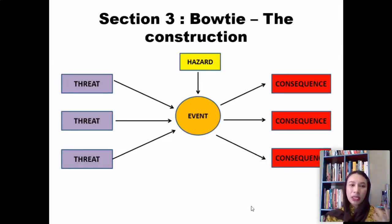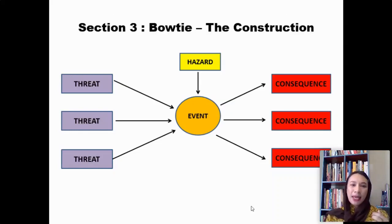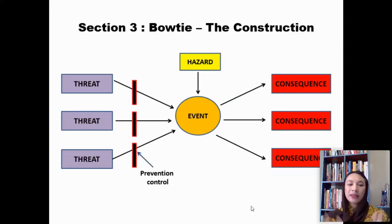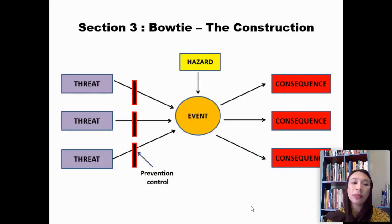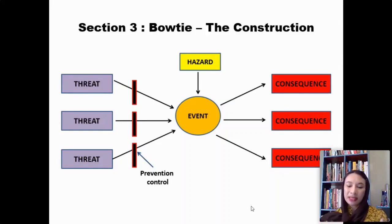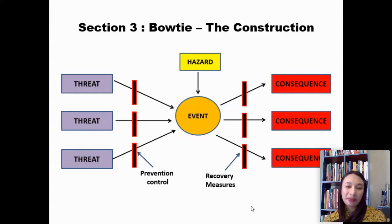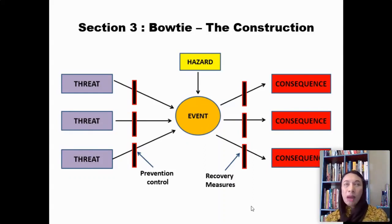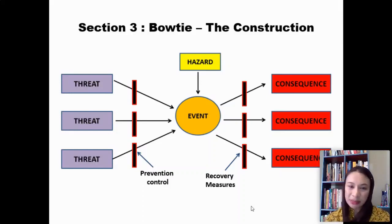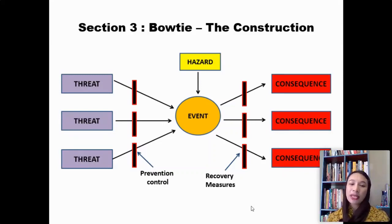That's the idea of constructing the bowtie. You have the prevention controls in between the threat and the event — the reason you put prevention controls is because you want to stop the threat from leading to the event. And you have recovery measures because you want to mitigate the consequences. The event has already happened, but you need to make sure that you can recover from it.